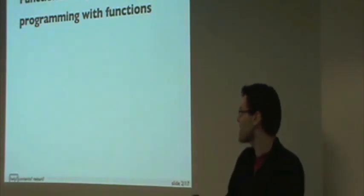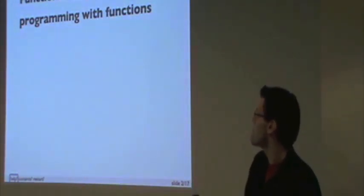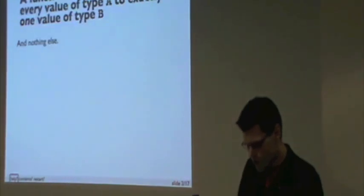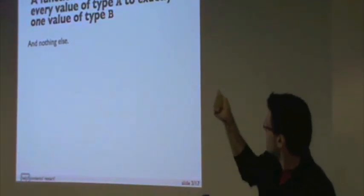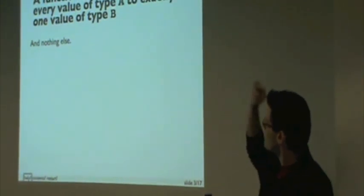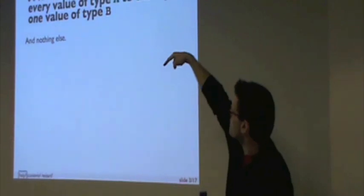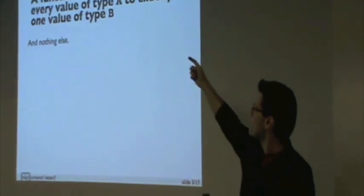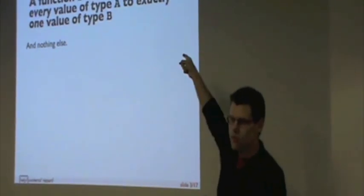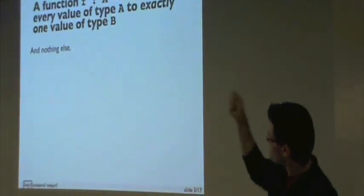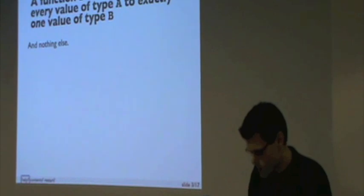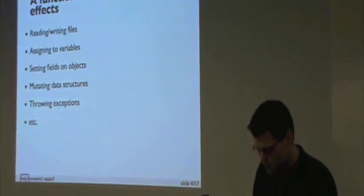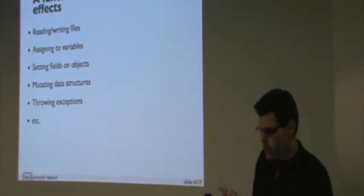I'm not kidding. This is serious stuff. When we say functions, we mean something very specific. A function F of type A to B relates every value of type A to exactly one value of type B and nothing else. 'Nothing else' is very important, and 'every' and 'exactly one' are also important because we're saying there are no As for which F can't give us a B. And a function can't have side effects.